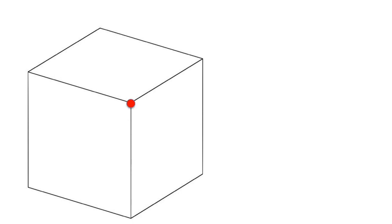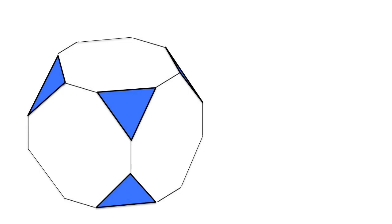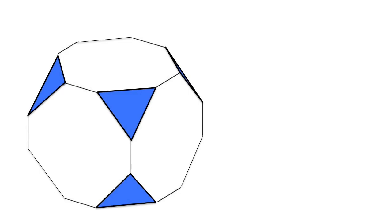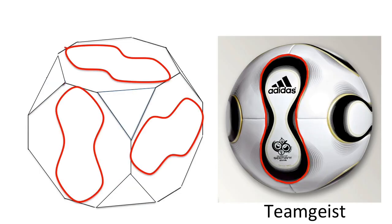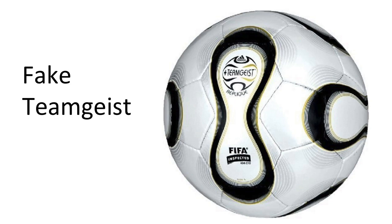How is the Teamgeist made from a platonic solid? Start with a cube. Like before, pick a corner, divide the connecting edges into thirds, then slice off the corners. Doing this to each corner produces the truncated cube with six octagons and eight triangles. To get the Teamgeist, identify each octagon with a dumbbell-shaped panel and each triangle with a propeller shape. Reshaping the panels and inflating it produces the Teamgeist. And don't be fooled by a fake Teamgeist which prints the Teamgeist pattern onto a Telstar design.